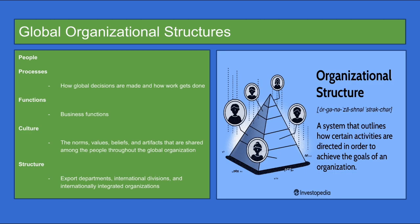Global organizational structures is a way a company aims to merge local preferences with the international market. This deals with the people, the process of how global decisions are made, the function of business, culture of norms, values, and beliefs, as well as the business structure as a whole.